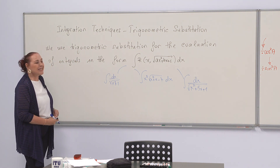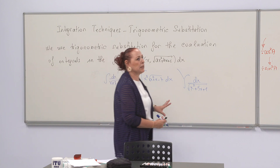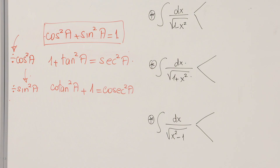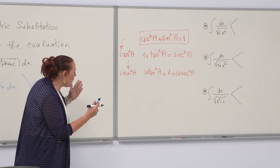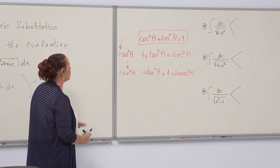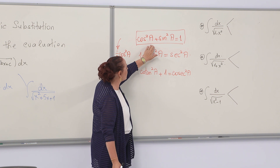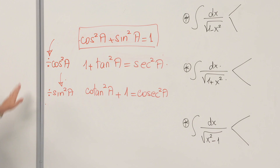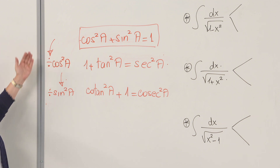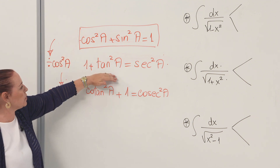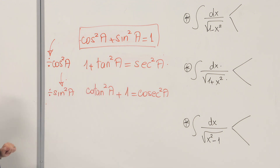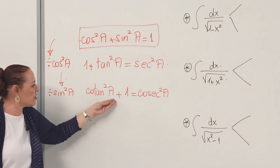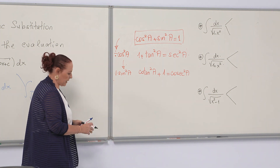We will be starting with simple examples. We have this very well-known identity that will guide us through the choice. From this identity, if you divide each term by cosine² you end up with 1 + tan² = sec², or if you divide each term by sine² you have cot² + 1 = csc².